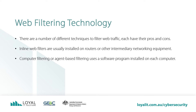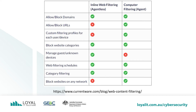Inline web filters are usually installed on routers or other intermediary networking equipment. Computer filtering, or agent-based filtering, uses a software program installed on each computer. Thanks to currentware.com for this neat table of the pros and cons of each technology. Both types can allow and block domains. URLs typically point to a particular web page rather than filtering on a domain. For example, a URL may be https://google.com/help.html. An agent can filter on this, where inline typically can't filter this granularly.